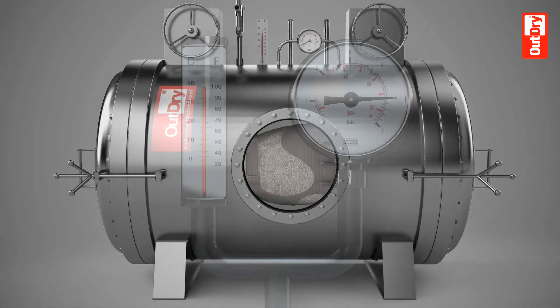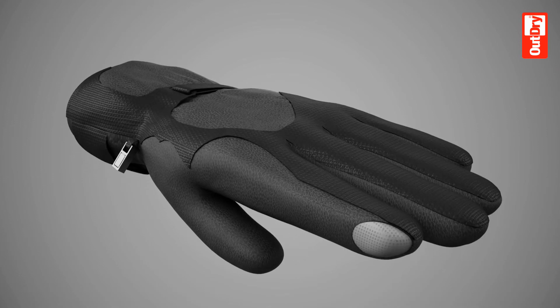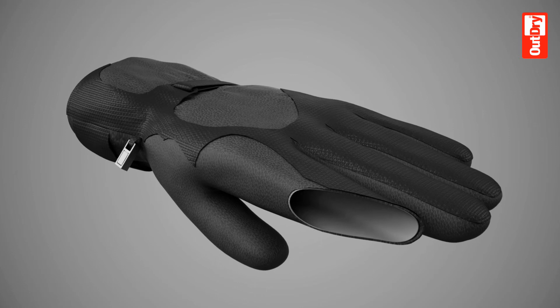The OutDry lamination process is completed. The glove shell and the membrane are now a single body, and there is absolutely no empty space between the two surfaces where water can stagnate.